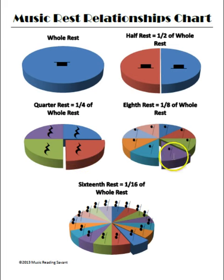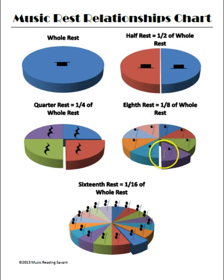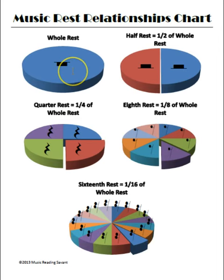When we take a look at the pie over here and divide it into eight pieces, if you look at this one piece here, this is one out of eight, or one-eighth, which gives us the name eighth rest. So we need to have eight of these in order to equal a whole rest.